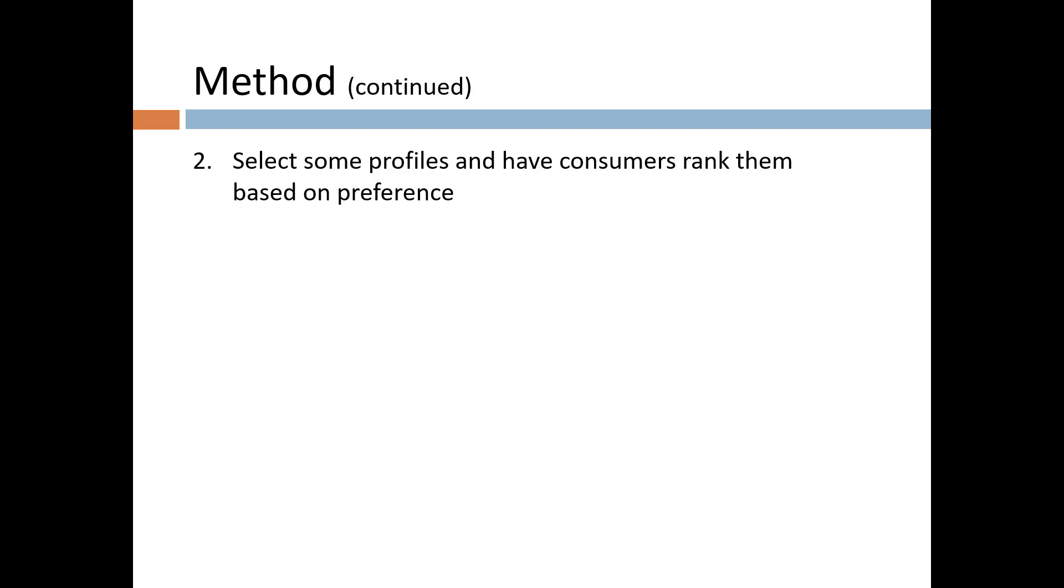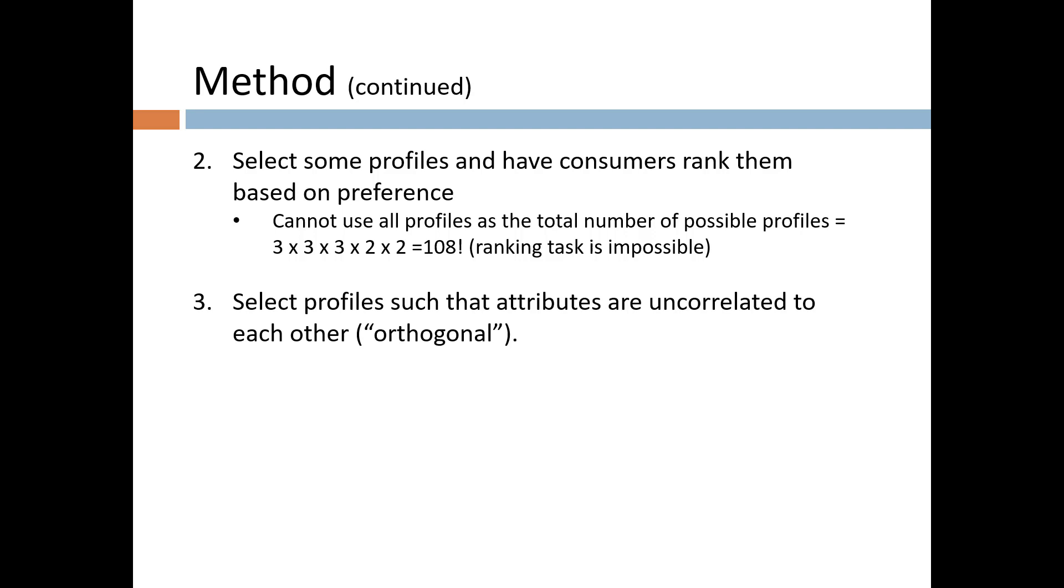The basic idea is that you select some of the possible profiles and have consumers rank them in order of preference. Notice that if we created every possible profile given all the possible combinations of attributes, that would result in 3 times 3 times 3 times 2 times 2 or 108 profiles. It would be impossible for anyone to rank 108 possible options.